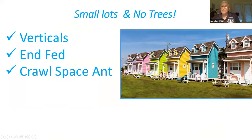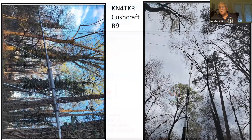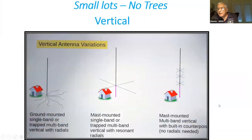Let's talk now about smaller lots and no trees. Here you can talk about verticals, end-fed antennas, and some compromise antennas such as a crawl space antenna. Vertical antennas come in three variations: ground mounted, mast mounted, and mast-mounted multi-band verticals, which have coils in them and operate on different bands.